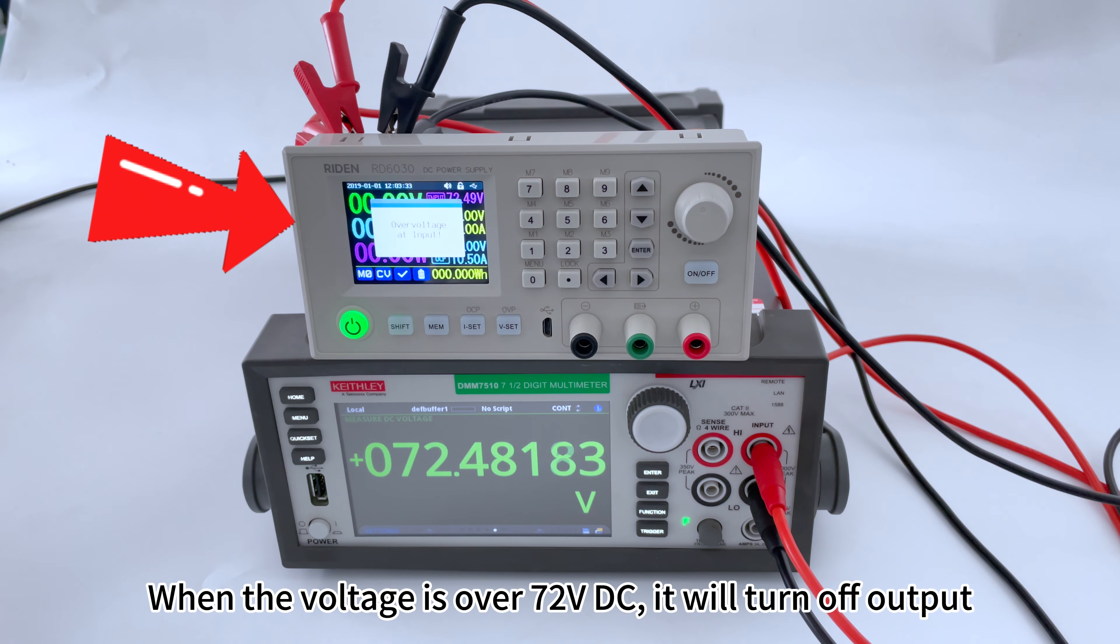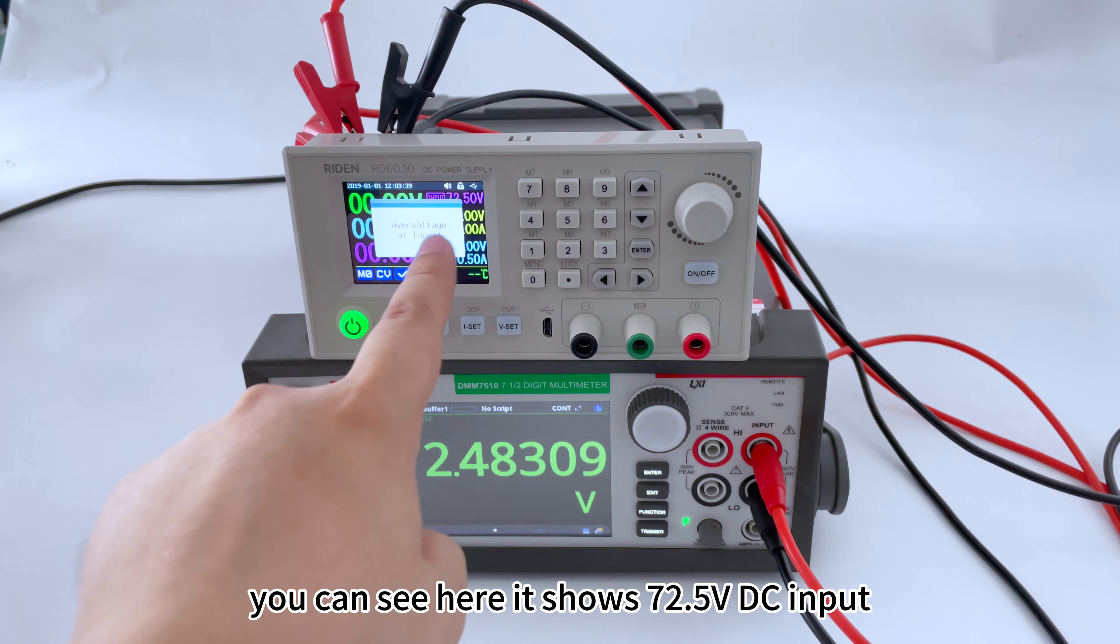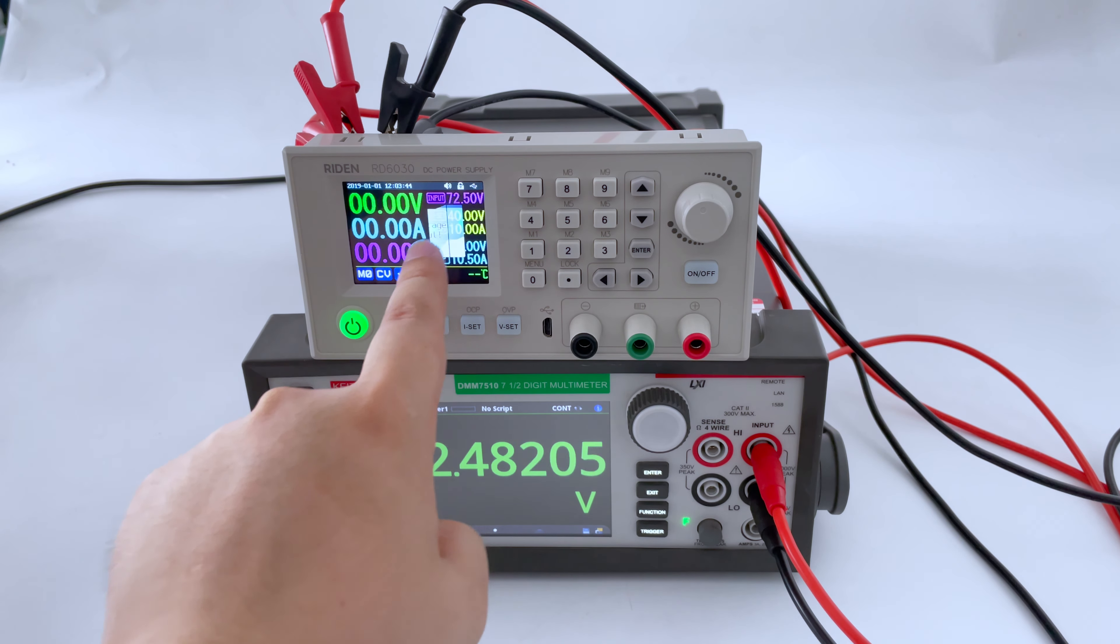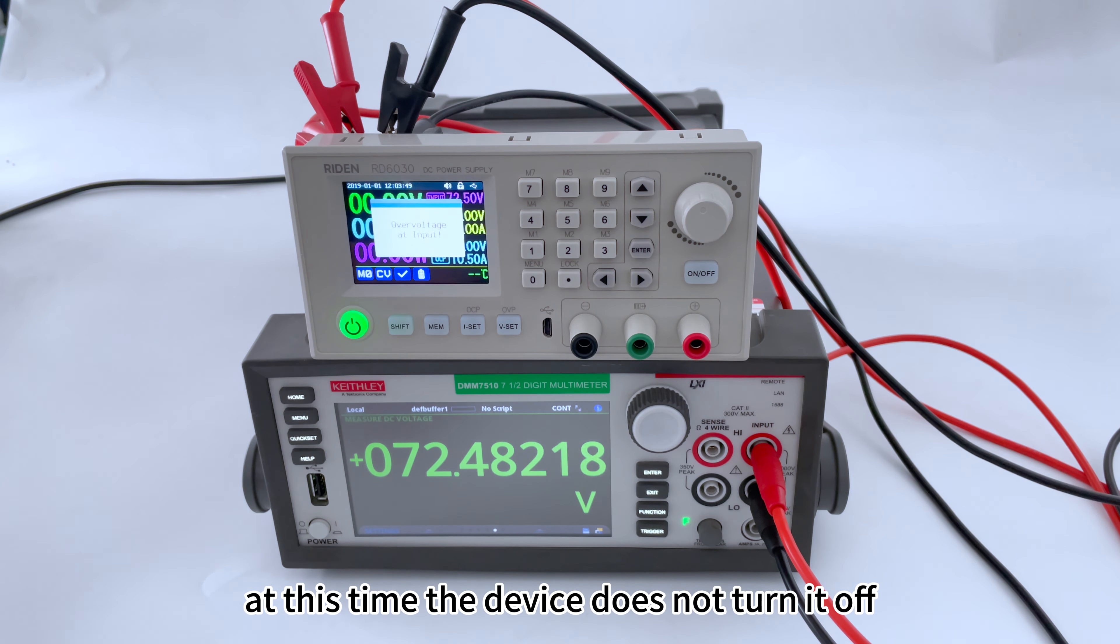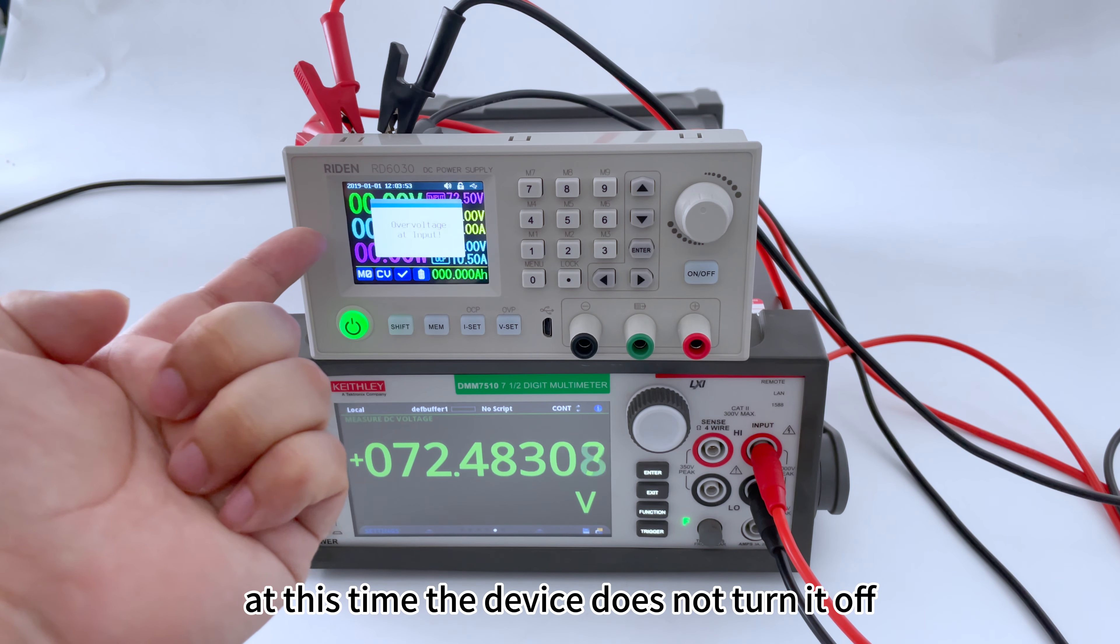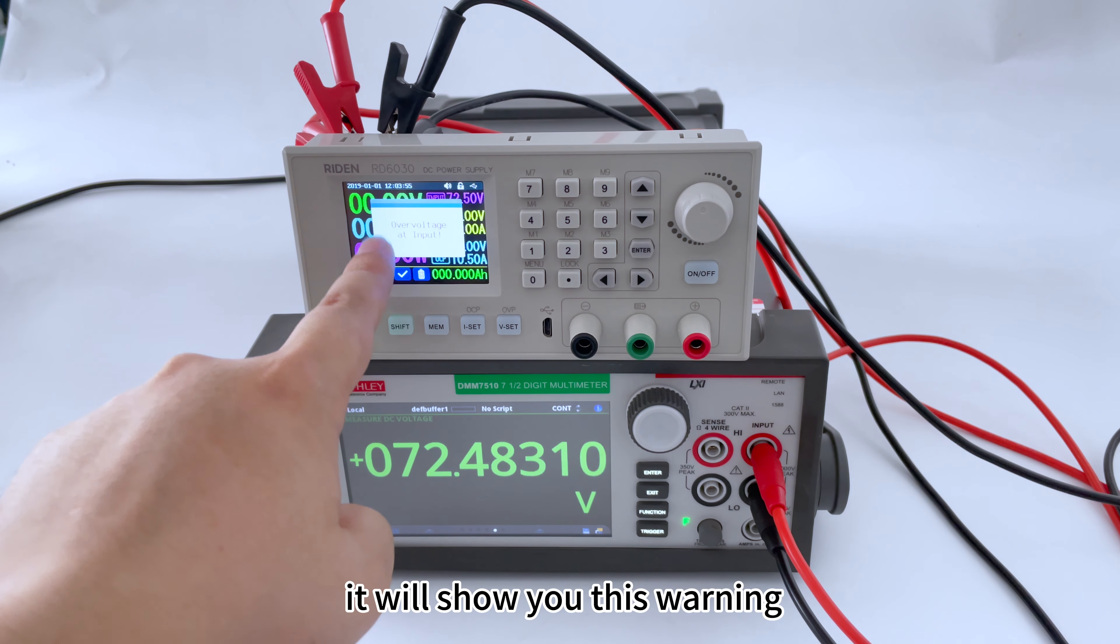When the voltage is over 72 volts, you can see here it shows 72.5 volt DC input and it will show over voltage at input. At this time the device does not turn off, it will show you this warning.